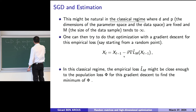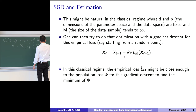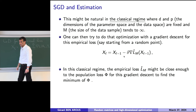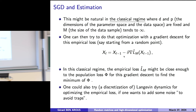In this classical regime where m is large enough compared to d and p, the empirical loss should be close enough to the population loss for this gradient descent to find a good approximation of the minimum of phi. That's the gradient descent for the empirical loss. The gradient of L̂_m is just the average. What you do is that every time step you use the whole dataset — that's the whole batch — and you take the average of the gradient over all these data points, and then you follow that.